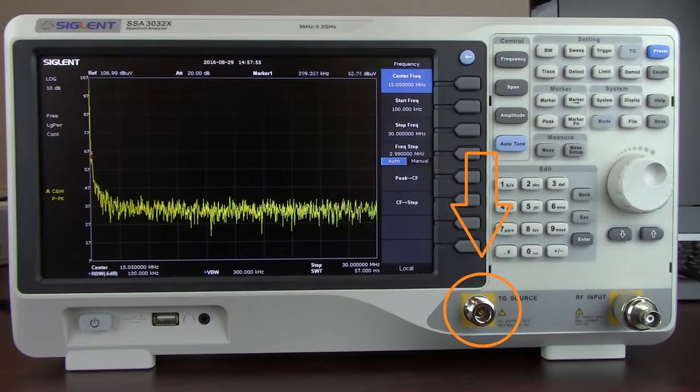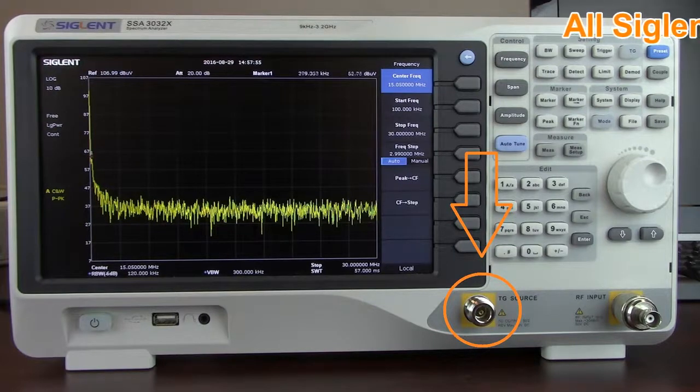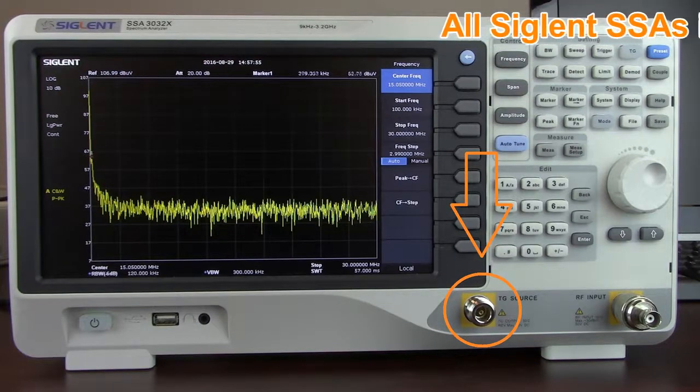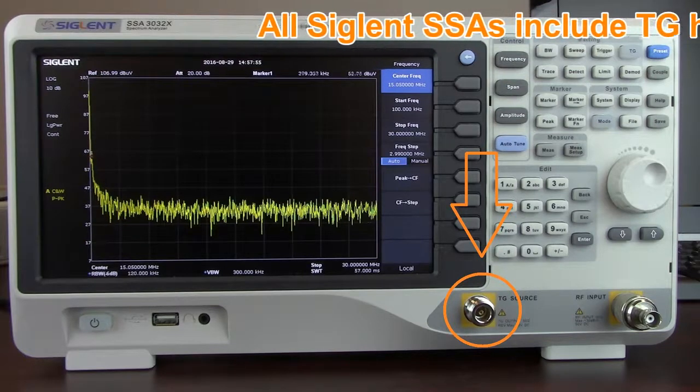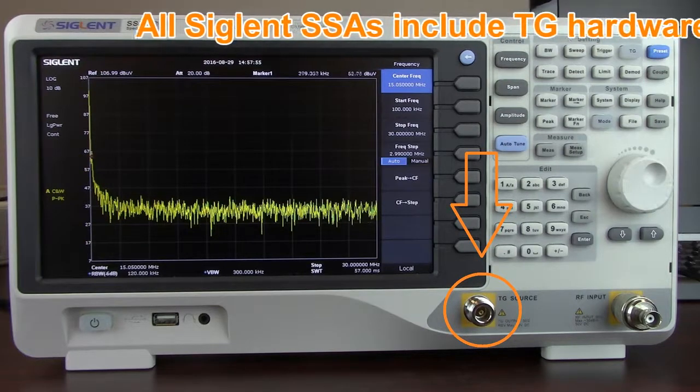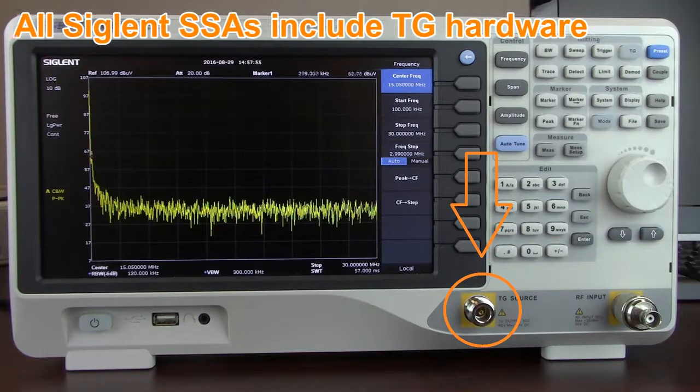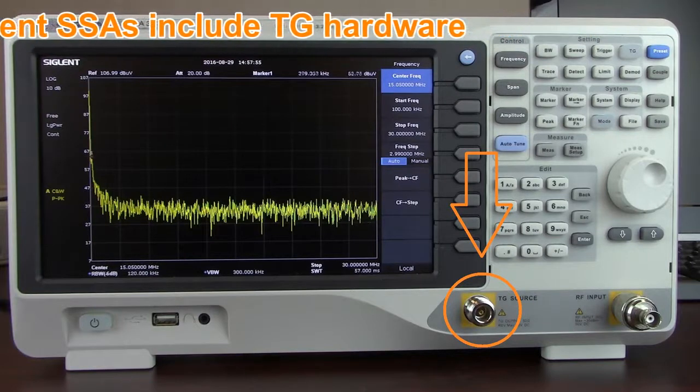With some competitive analyzers, you have to order the hardware when you buy the analyzer. There isn't an upgrade later on. With Siglent, the hardware is included. If you don't want the feature, you don't have to buy the license and you don't have to activate it. If you do purchase a unit without the TG option enabled, your upgrade is available at any time.